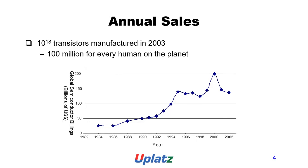Annual sales: ten-powered transistors were manufactured in 2003 — more than one for every human on the planet. The graph shows the year versus global semiconductor billings.